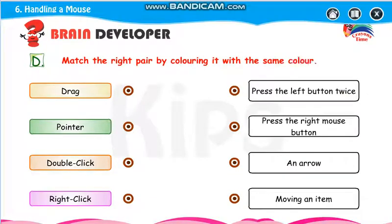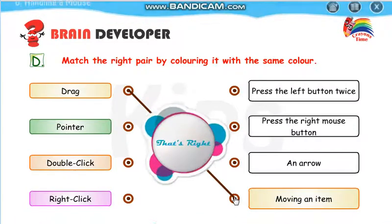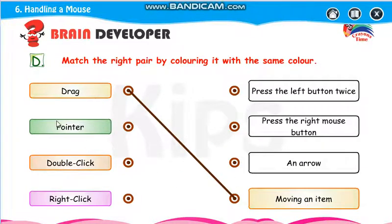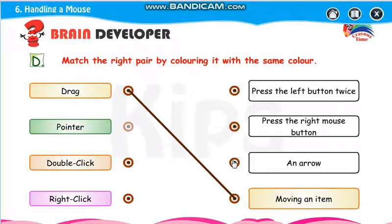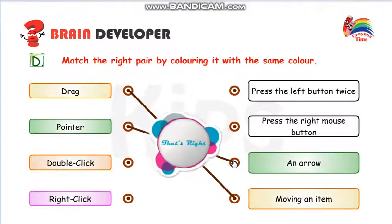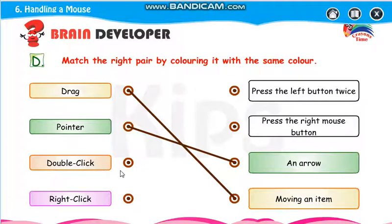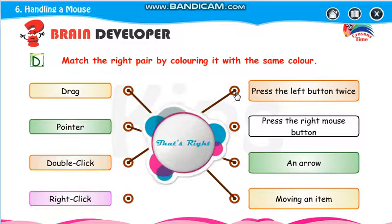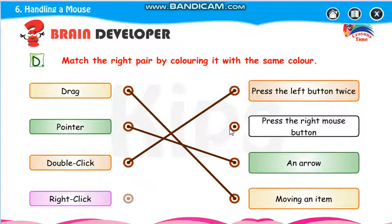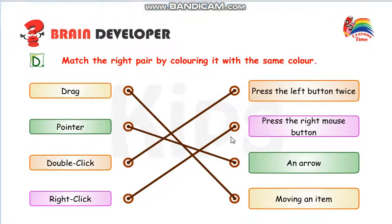Match the right pair by coloring with the same color. Drag means moving an item. Pointer matches with arrow. Double click means press the left button twice. Right click means press the right mouse button. Draw the connecting lines using a scale — use the scale for drawing straight lines.